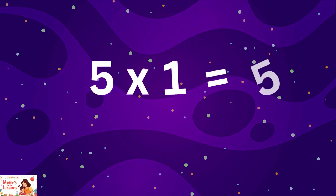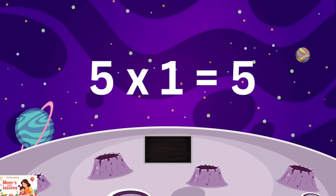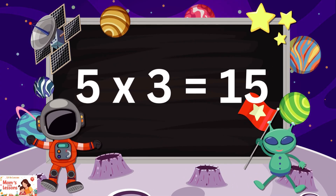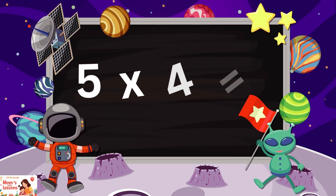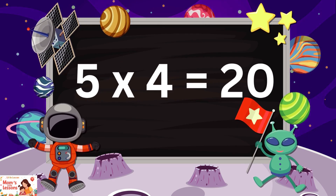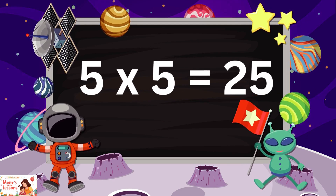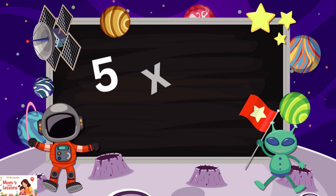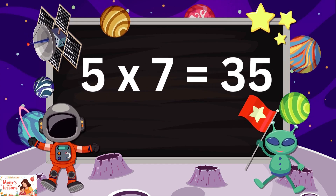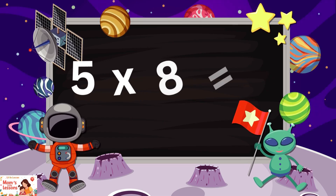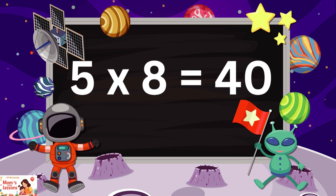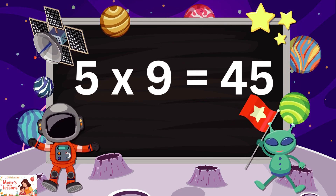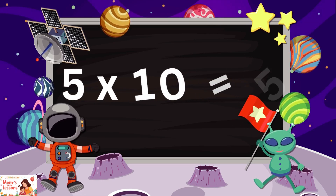Five ones are five, five twos are ten, five threes are fifteen, five fours are twenty, five fives are twenty-five, five sixes are thirty, five sevens are thirty-five, five eights are forty, five nines are forty-five, five tens are fifty.